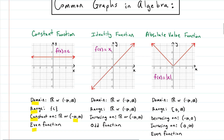The first graph is the constant function — that's just a horizontal line at whatever C is. So if C is five, it's a horizontal line at y equals five. The identity function, which is y equals x or f(x) equals x, is a diagonal line where each point has identical x and y coordinates. So (1,1), (2,2), (-1,-1) are all on the line. It's called the identity function.